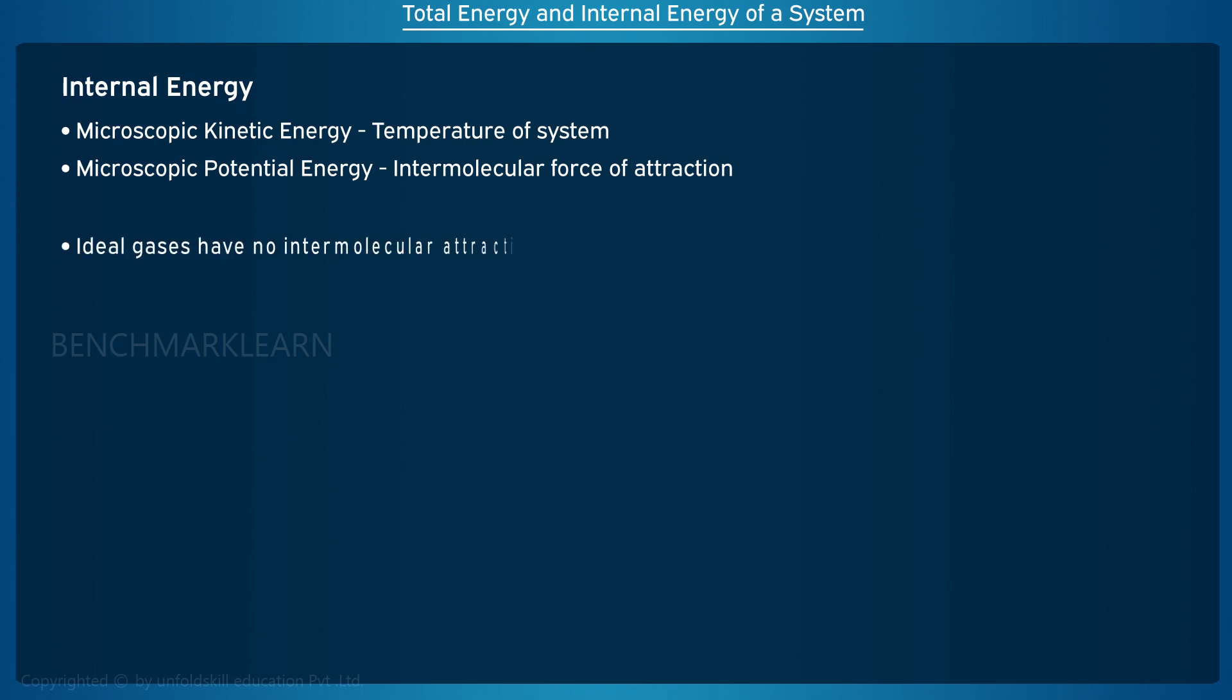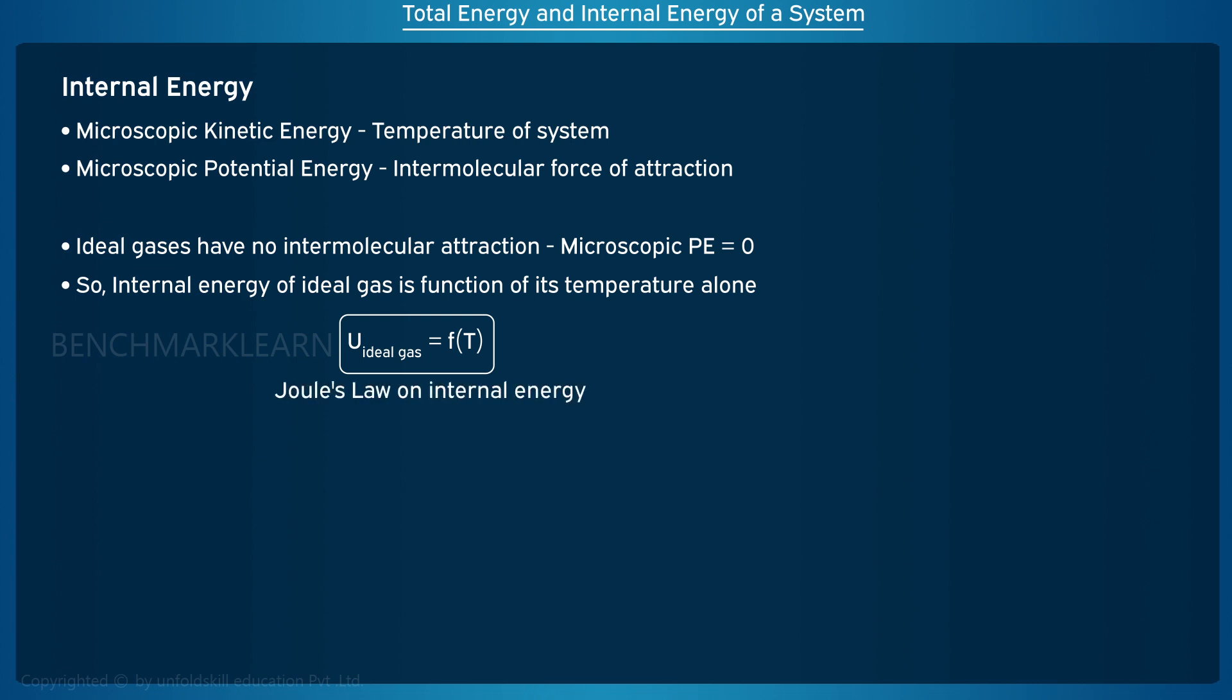But we know that the ideal gases have no intermolecular attraction. So its microscopic potential energy is zero. Due to this, the internal energy of a gas is considered to be a function of its temperature alone. U of ideal gas is equal to function of T. This is explicitly stated in Joule's law about internal energy.